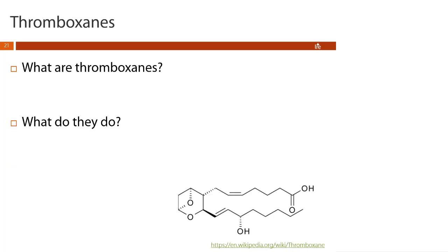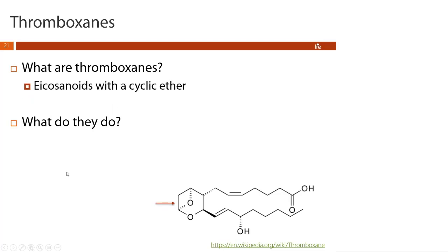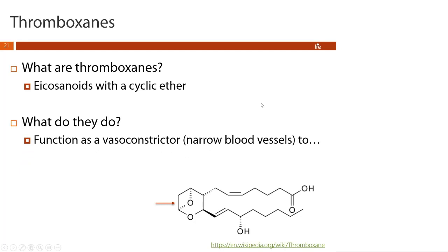Our next group of eicosanoids are thromboxanes. Thromboxanes are eicosanoids with a cyclic ether, and they function primarily as vasoconstrictors — they narrow blood vessels — and this induces platelet aggregation, which causes clotting.